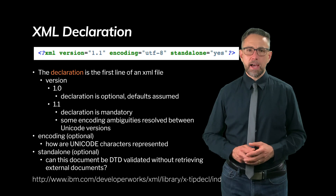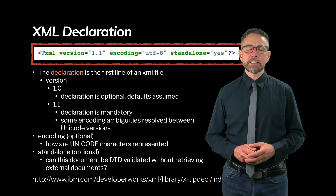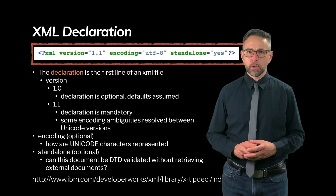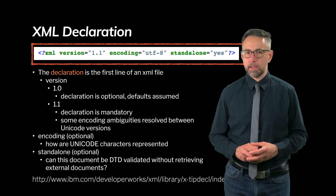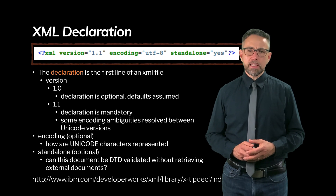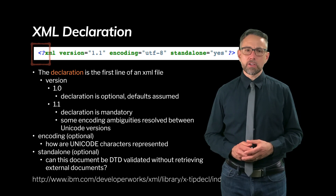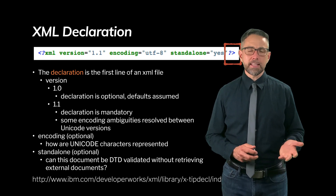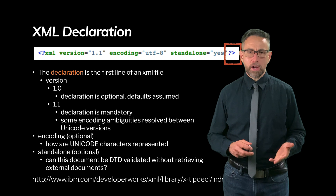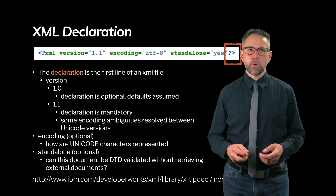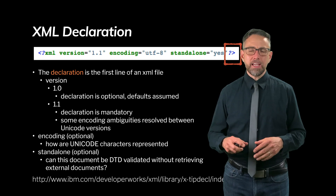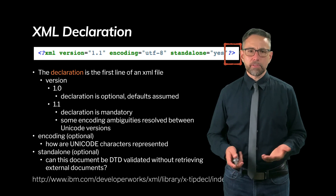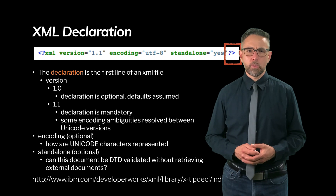Here's the first line in an XML declaration. This is the first line you will see in an XML file and it's important for establishing the encoding, for example. The declaration starts and ends with a special set of characters — a less-than sign and a question mark, then a question mark and a greater-than sign. This forms a kind of meta tag used only in the XML declaration.